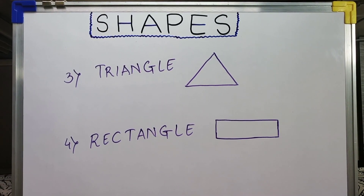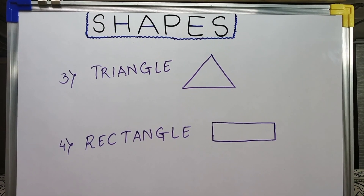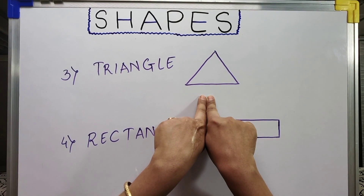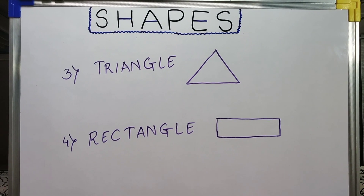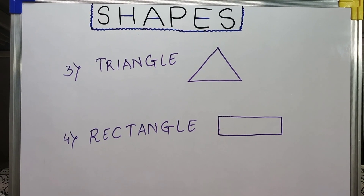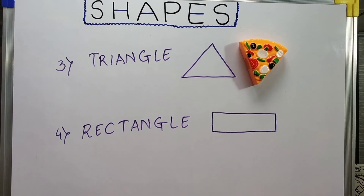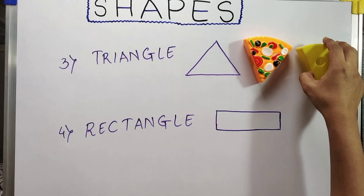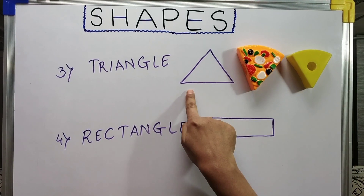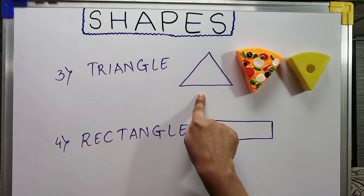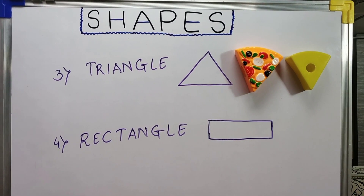The next shape we can consider is a triangle. First let them know this is a triangle, and then relate the triangle to everyday objects. For example, for triangle we can show them objects like a pizza slice, a sandwich, or their favorite toy which is triangle in shape. This will help them relate the triangle shape with objects, and hence will help them in recognizing triangle shape.